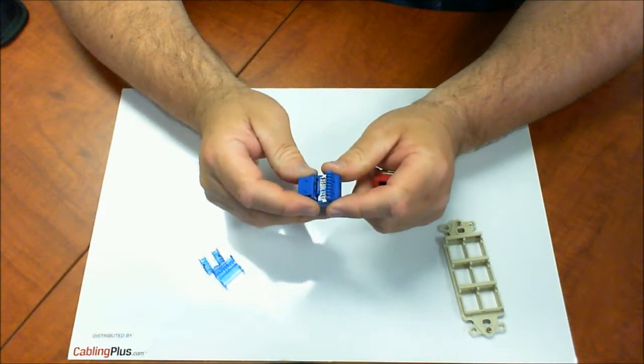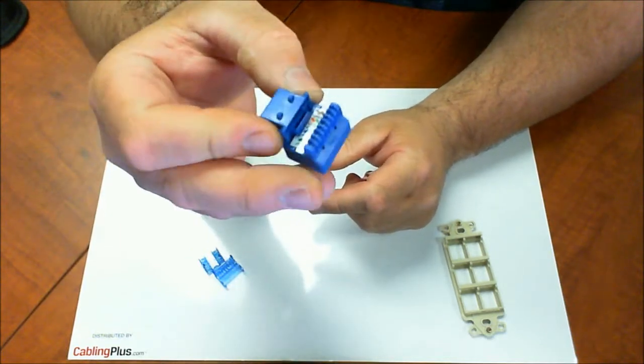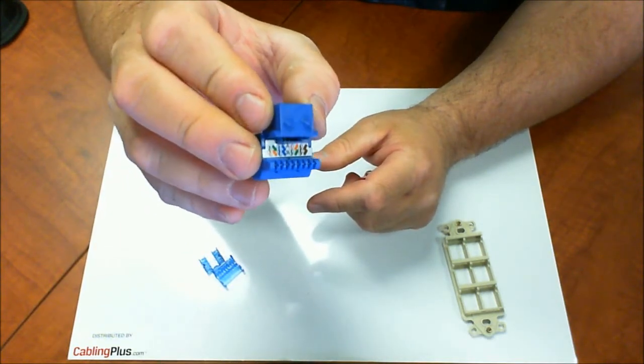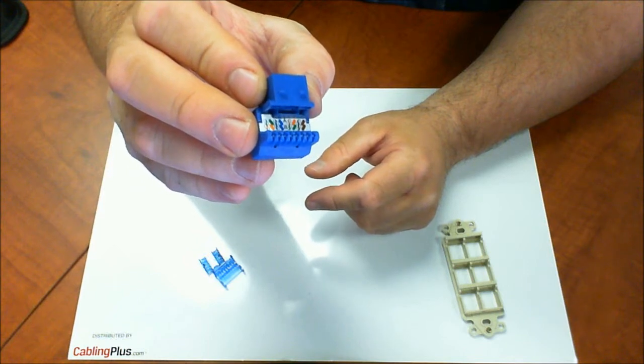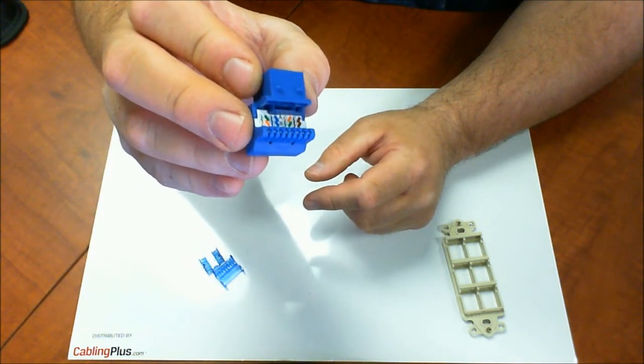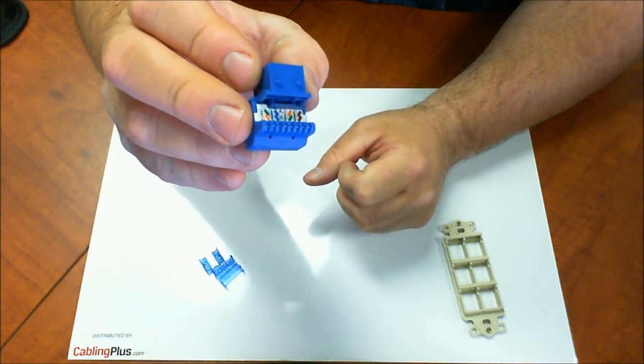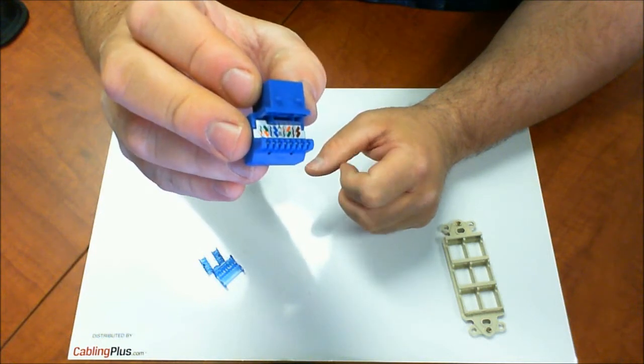So again they do a really good job. It's a one-piece design. If you can look on here, they do a really nice job laying out your TIA color codes. It's a 110 termination block back there so you're going to have to use a 110 tool with a 110 blade to terminate these.